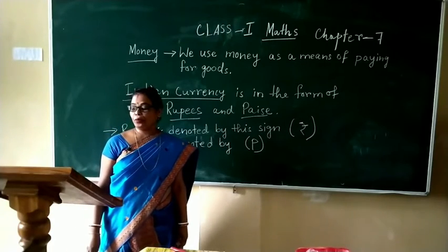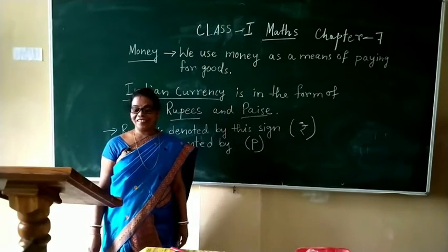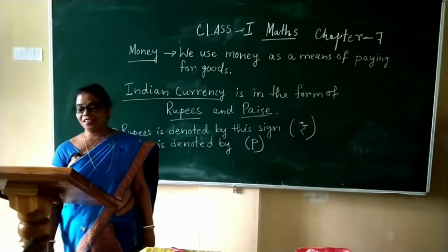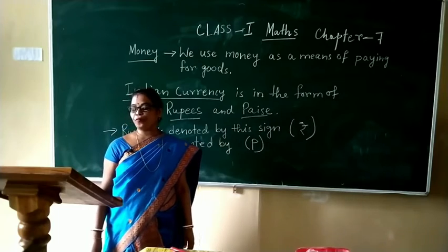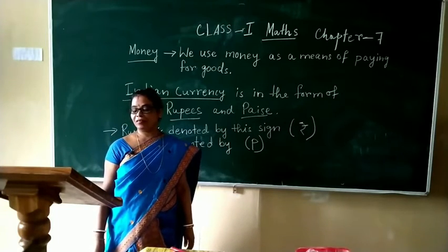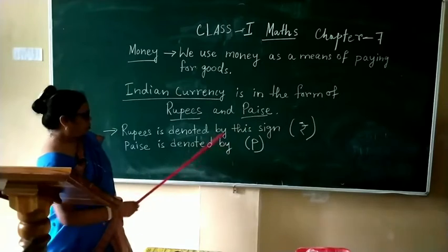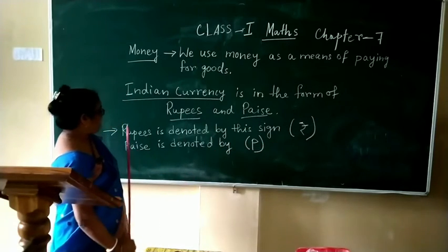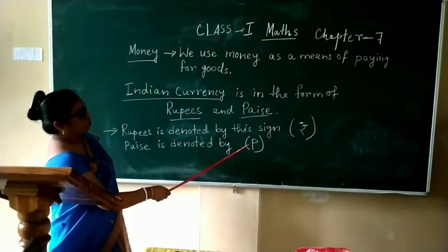We Indian people use money in currency. Indian currency is in the form of Rupees and Paise. Rupees is denoted by this sign R. Paise is denoted by P.